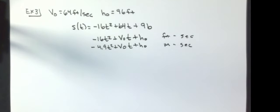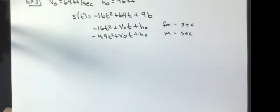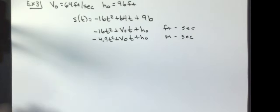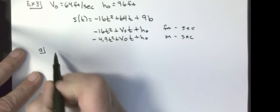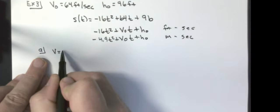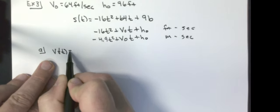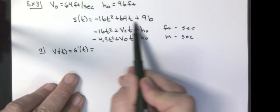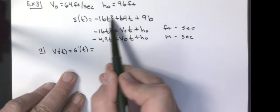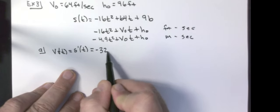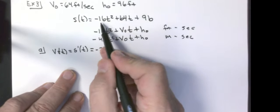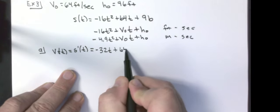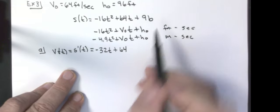That's from last year in college algebra. So now let's answer the questions. Part A says find the velocity and acceleration functions. Velocity at any given time is equal to S prime of T. This is a power rule problem — I'm just going to take the derivative: multiply by the exponent, giving negative 32T, plus 64. The derivative of 96 is zero because that's a constant.